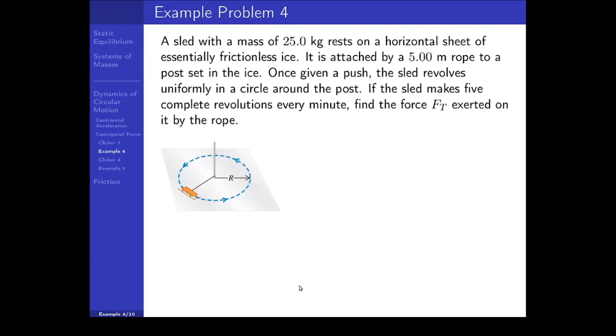Let's see an example. A sled with a mass of 25 kilograms rests on a horizontal sheet of essentially frictionless ice. It is attached by a 5 meter rope to a post set in the ice. Once given a push, the sled revolves uniformly in a circle around the post. If the sled makes 5 complete revolutions every minute, find the force exerted on it by the rope. Okay, so here's an illustration of that sled.